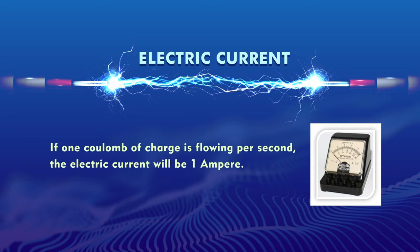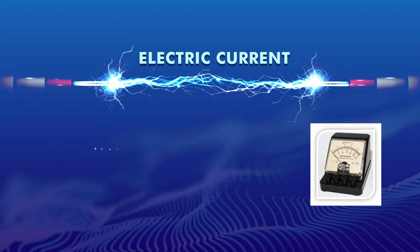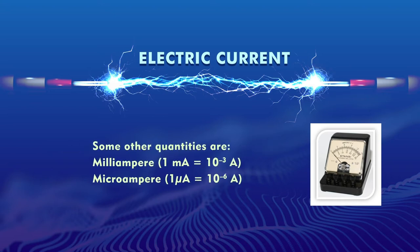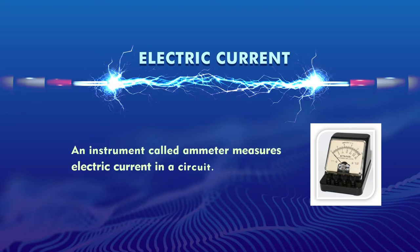Through a conductor, if one coulomb charge — that is, 6 × 10¹⁸ electrons — flows per second, the electric current is one ampere. Nowadays, even smaller units of ampere are used. You can ask your students to find the devices at home where the charge is written in milliamperes. One milliampere is 10⁻³ ampere, and one microampere is 10⁻⁶ ampere.